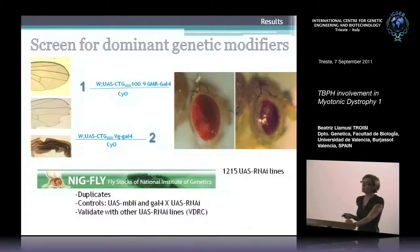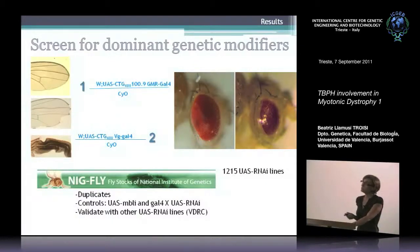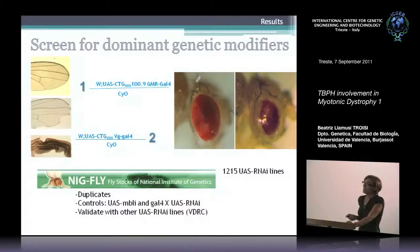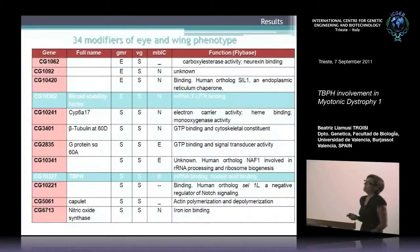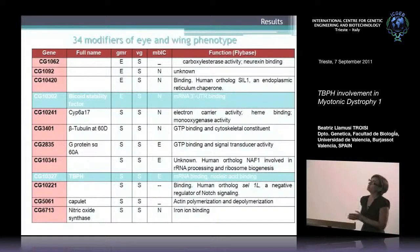We always used RNAi of muscle-blind as a positive modifier of both phenotypes. Every positive was also crossed with the GAL4 line alone to ensure that the RNAi of that gene had no phenotype by itself. Positive genes were validated using other RNAi lines such as those from Vienna. We obtained 34 modifiers of the phenotype in both eye and wing.